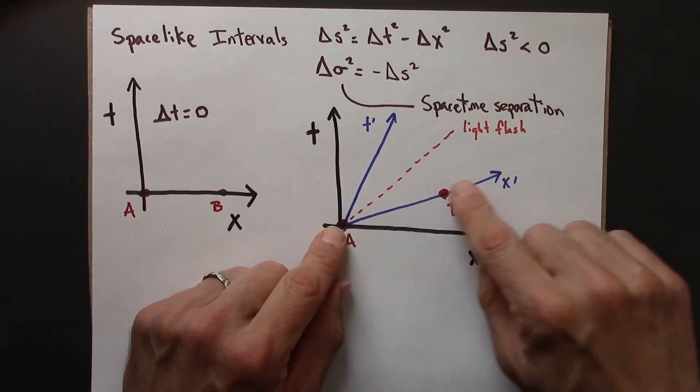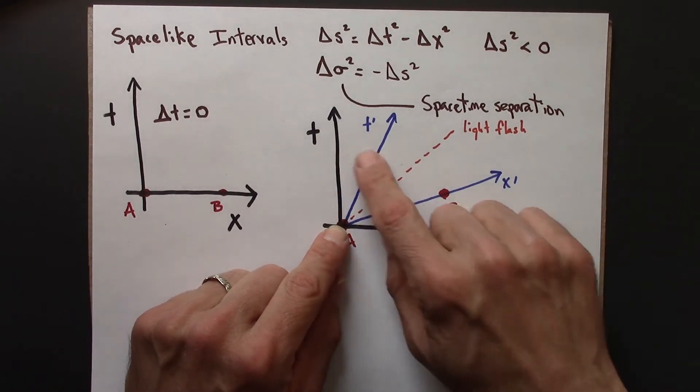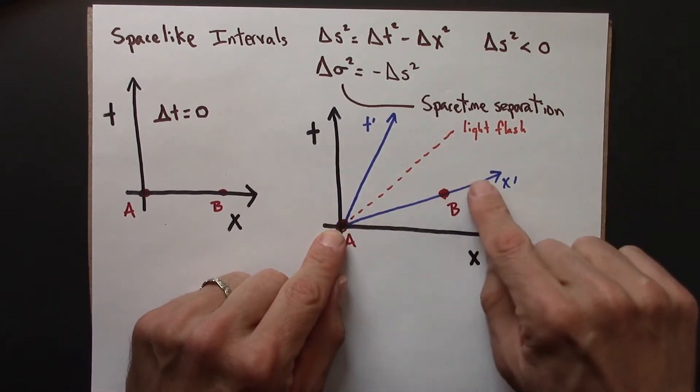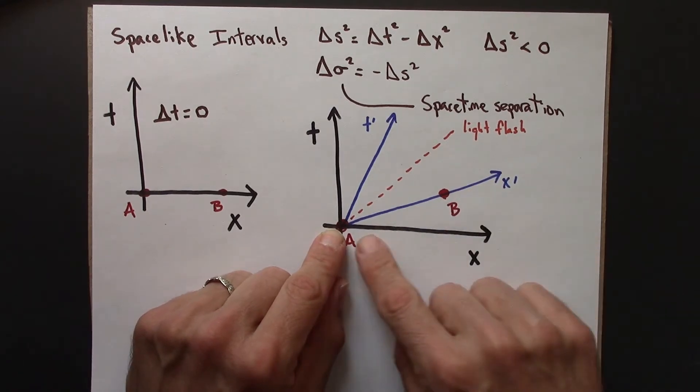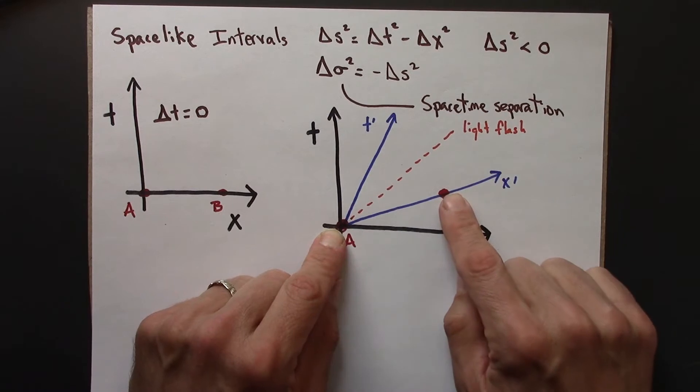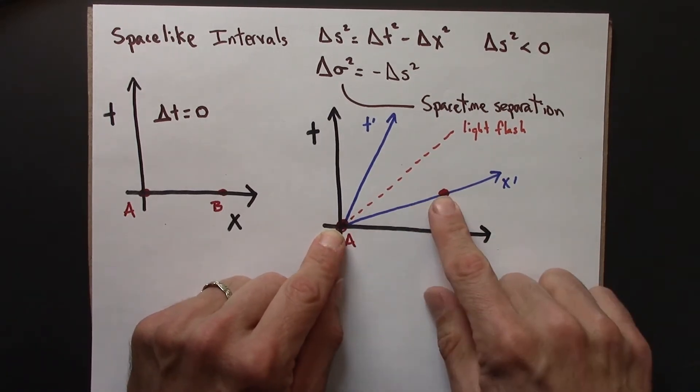And so that means that A and B are simultaneous in the blue frame, in the primed frame. And if they're simultaneous, then we can think of this just as a length. Two simultaneous measurements.